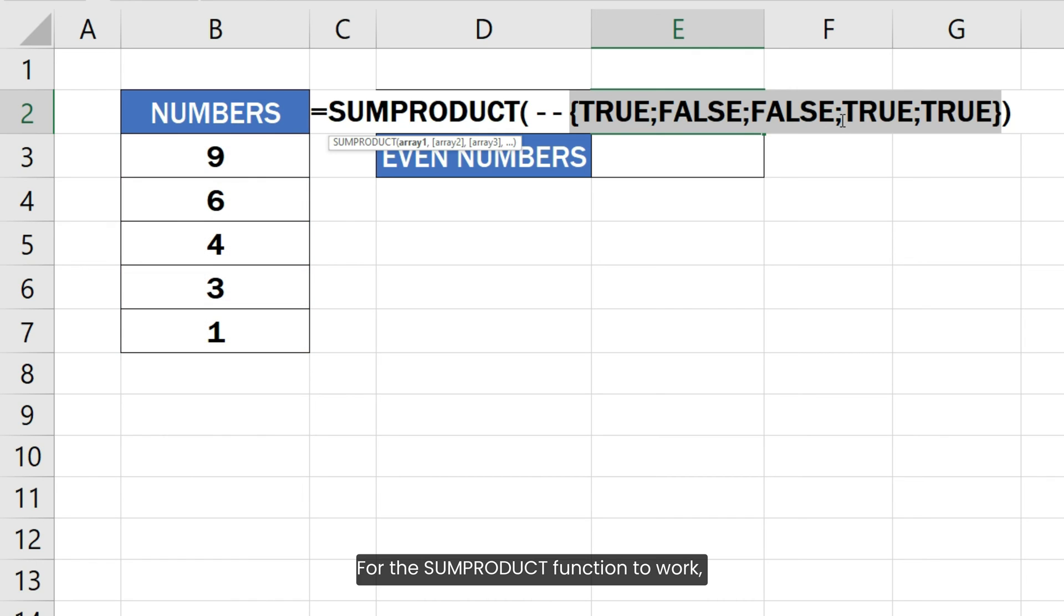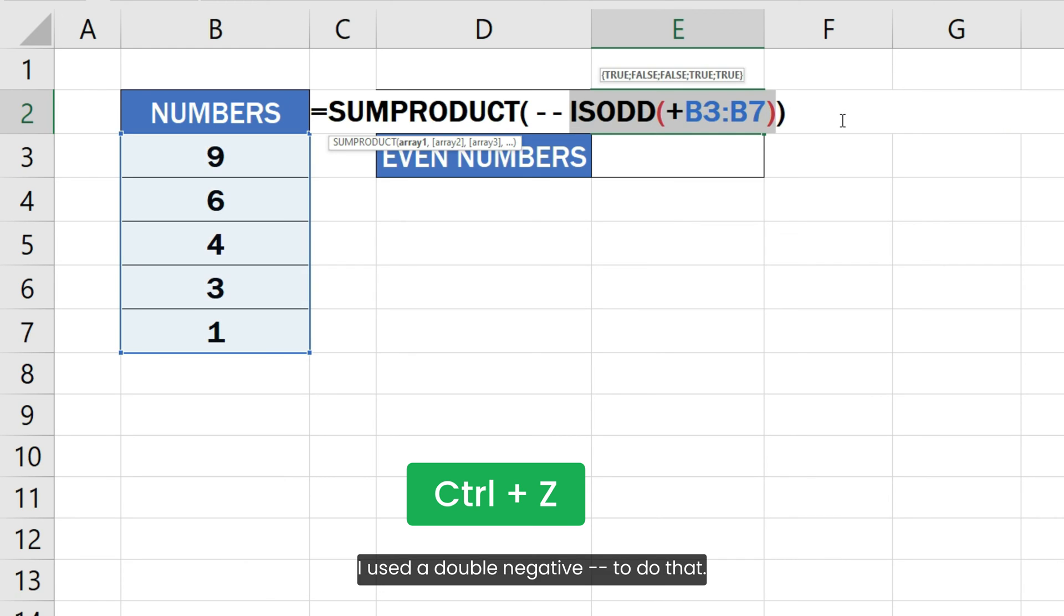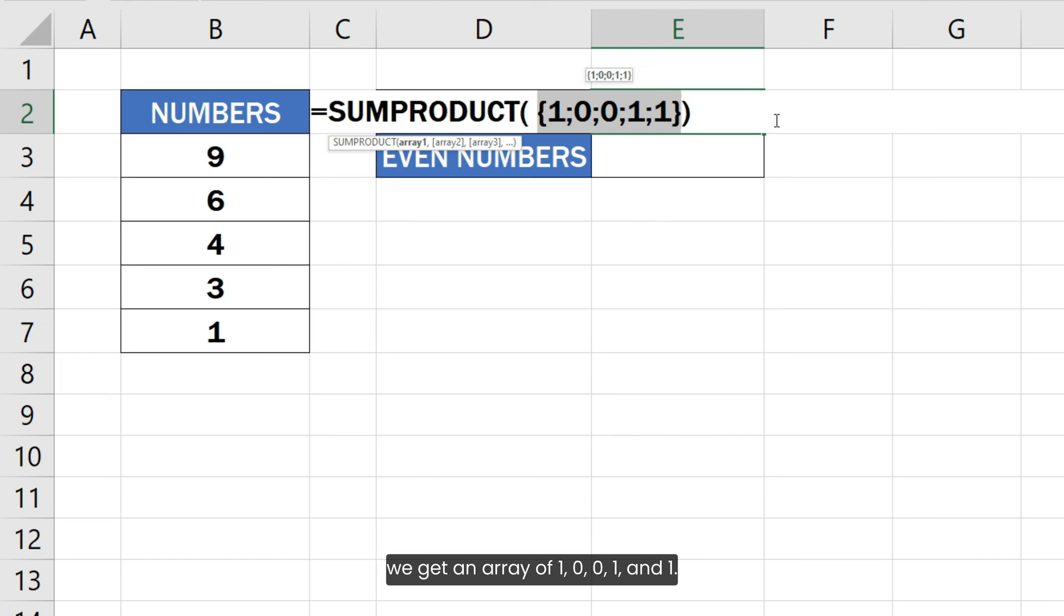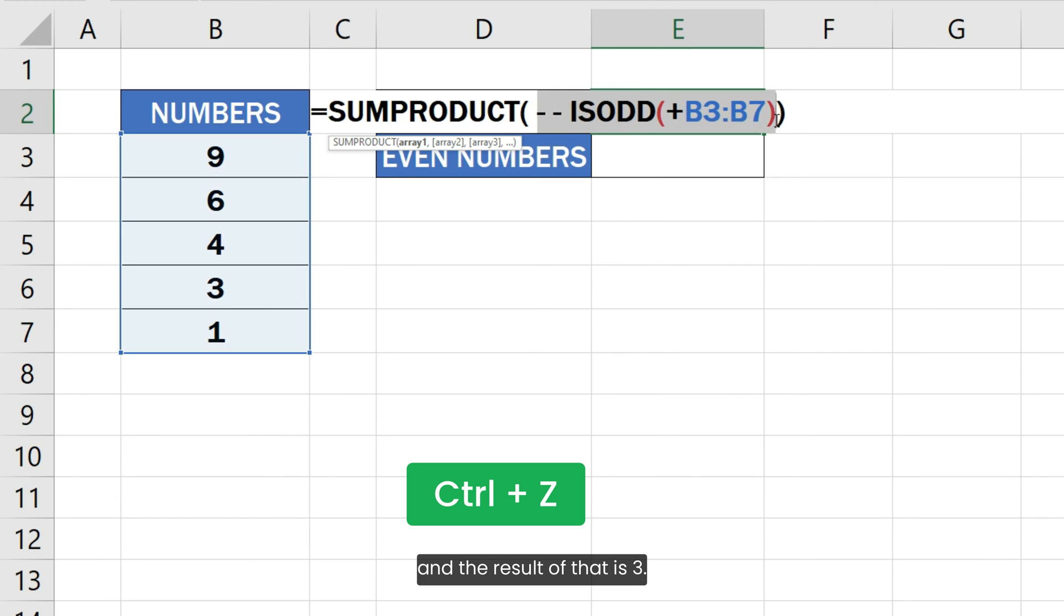For the SUMPRODUCT function to work, we need to convert the true and false values to 1 and 0 respectively. We used a double negative minus minus to do that. After applying the double negative, we get an array of 1, 0, 0, 1 and 1. The SUMPRODUCT function then sums up the array elements and the result of that is 3.